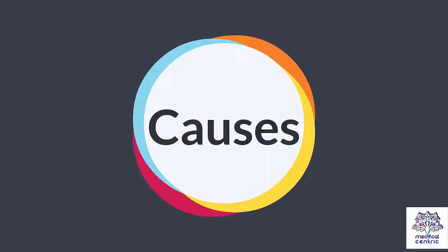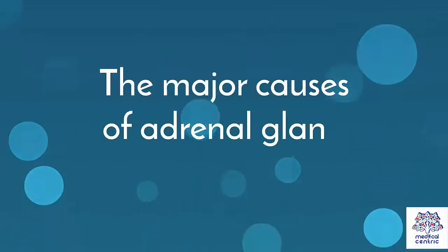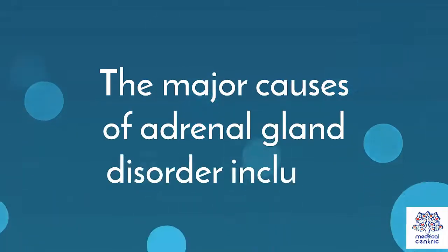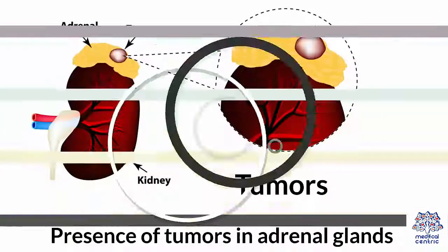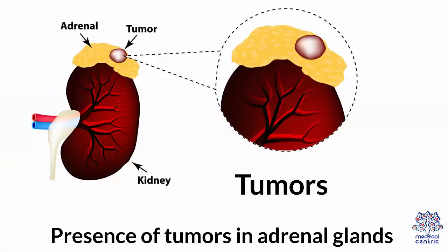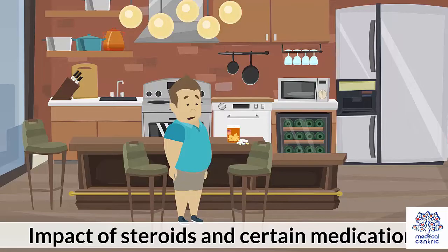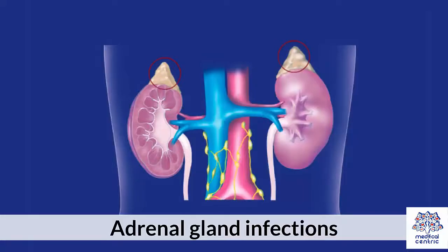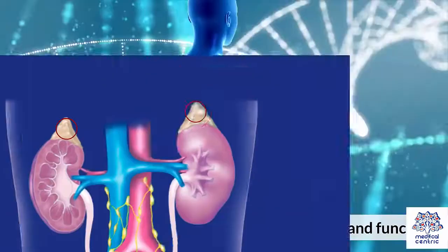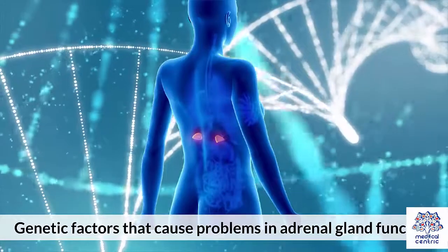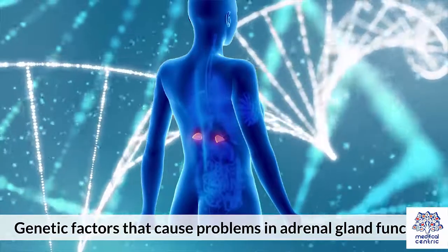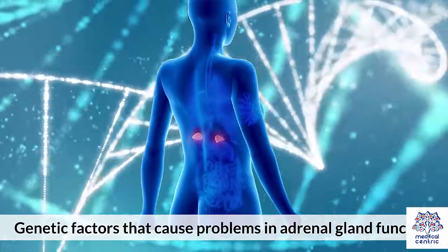Causes – The major causes of adrenal gland disorder include: 1. Presence of tumors in adrenal glands. 2. Pituitary gland malfunction. 3. Impact of steroids and certain medications. 4. Adrenal gland infections. 5. Genetic factors that cause problems in adrenal gland function.